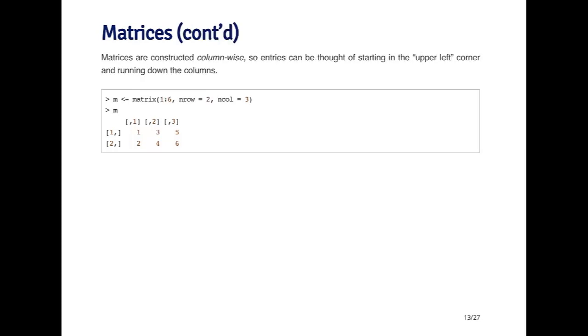Matrices are constructed column-wise, so you can think of the matrix taking a vector, and all the numbers are inserted into the matrix by columns. The first column gets filled, and then when you hit the maximum number of rows, the second column gets filled, then the third column, et cetera.